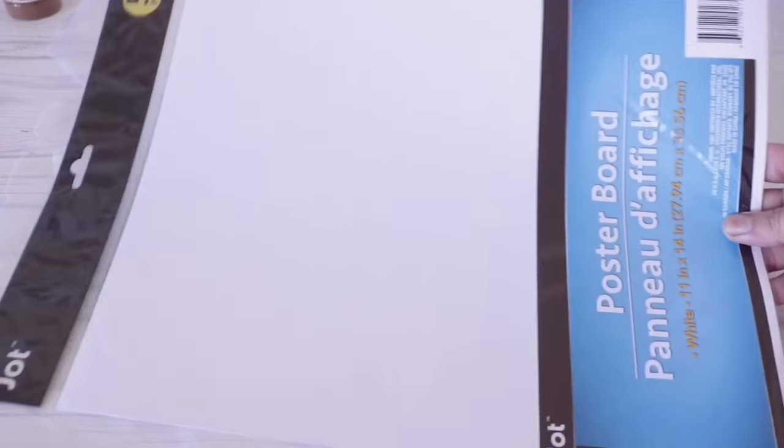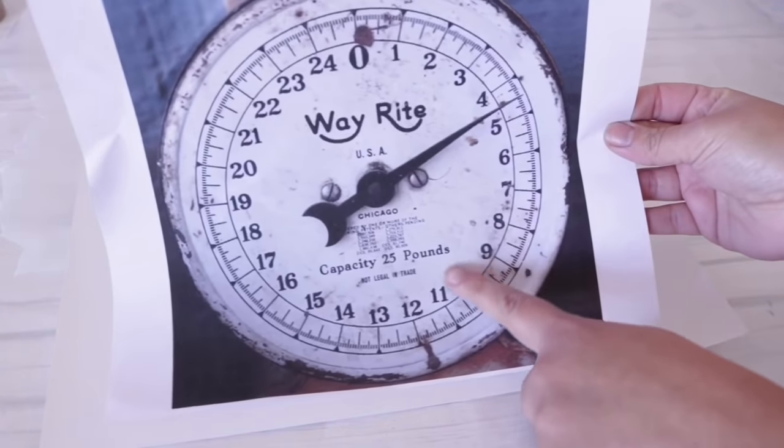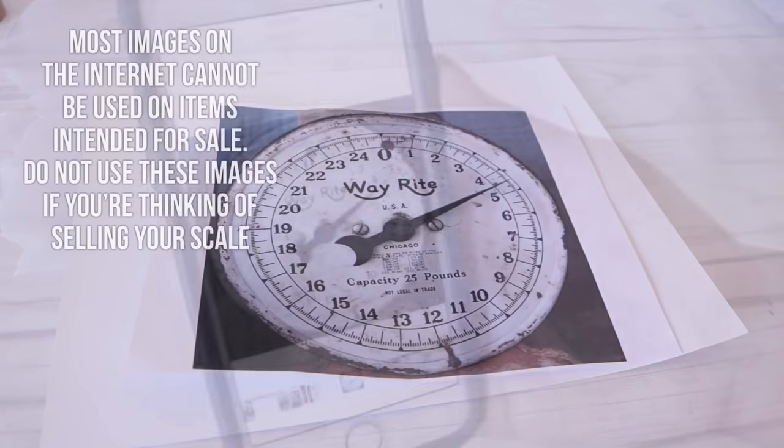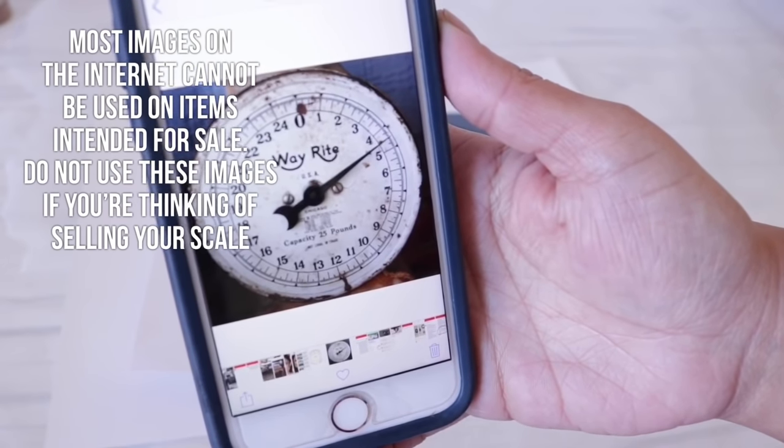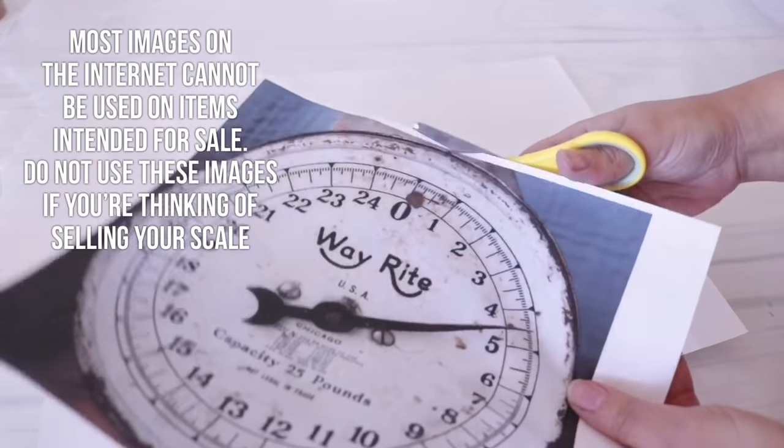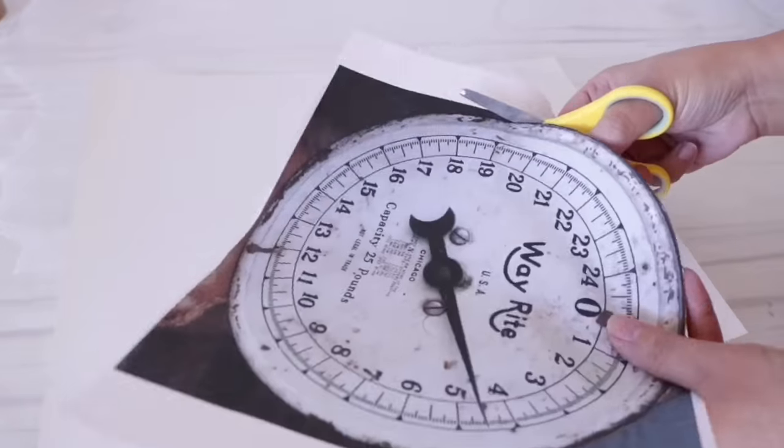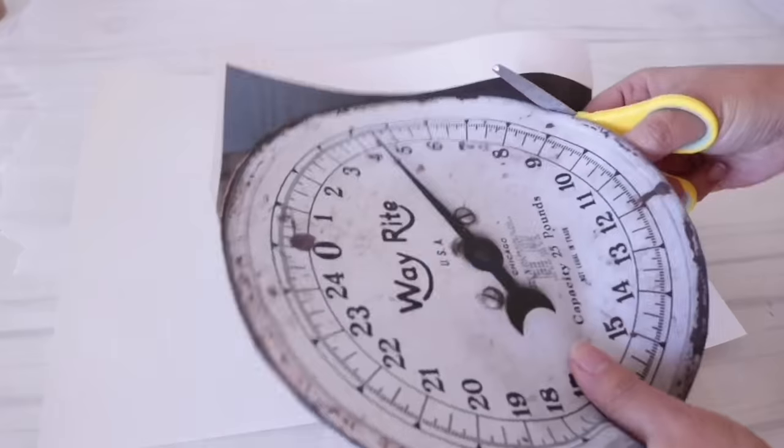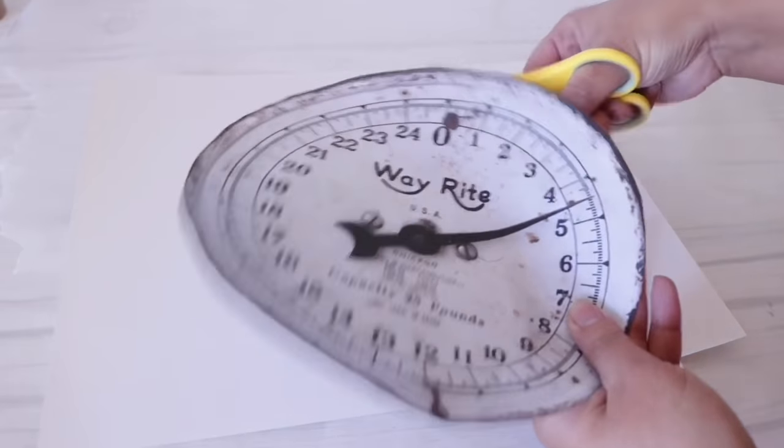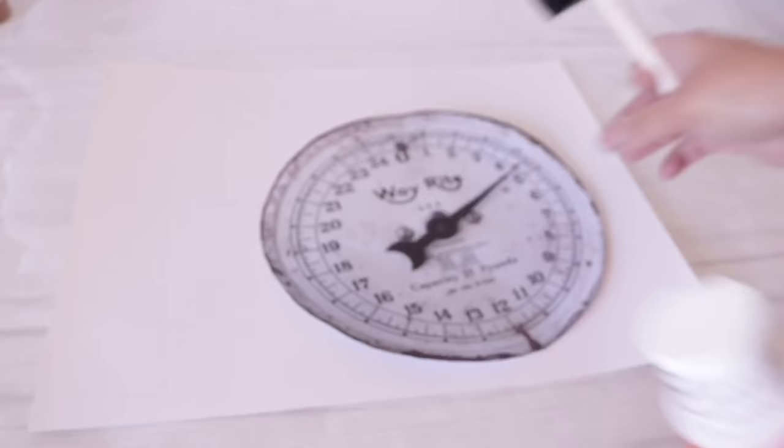To create my scale face, I used some Dollar Tree poster board, but of course you can use whatever you want. I printed this image off of Google. It had a lot of nice rust spots, but please be aware that if you are printing an image off of the internet, most images are copywritten or have a logo that you're not allowed to use. So you're not allowed to use this if you're trying to sell these scales. You're better off photoshopping your own.